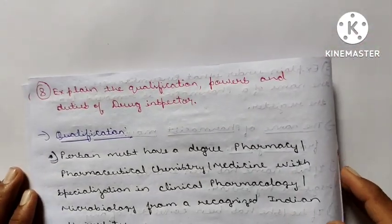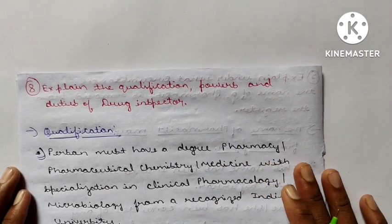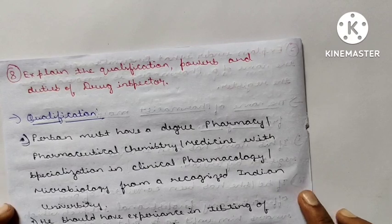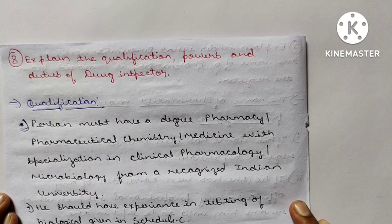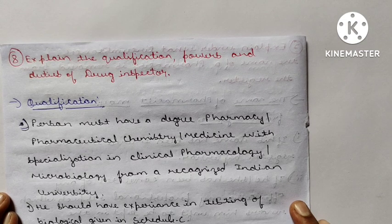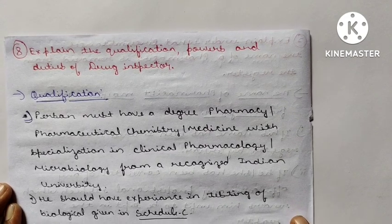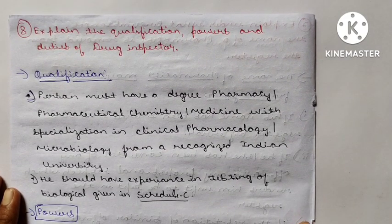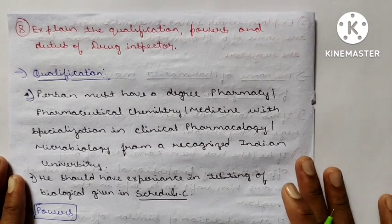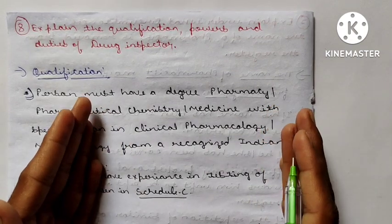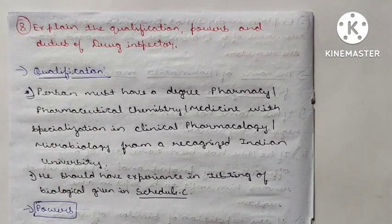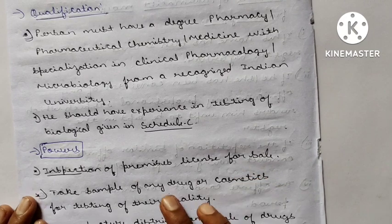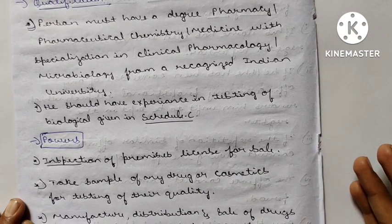Question 8: What are the qualifications, powers, and duties of the Drug Inspector (DI)? For qualifications, a person must have a degree in pharmacy, mainly in pharmaceutical chemistry, medicine with specialization in clinical pharmacology or microbiology from a recognized Indian university. He should have experience in testing of biological drugs listed in Schedule C. A degree is compulsory, especially for UPSC examination.